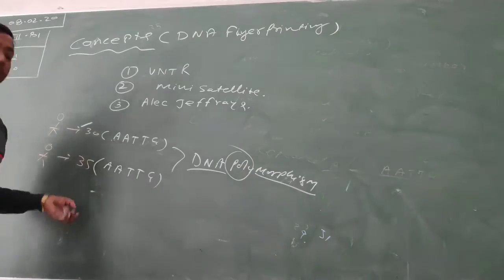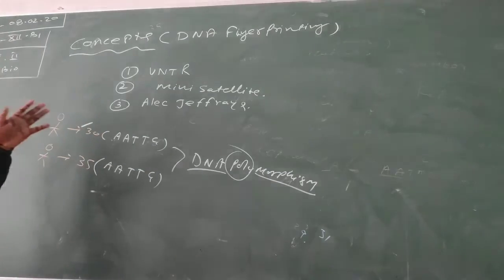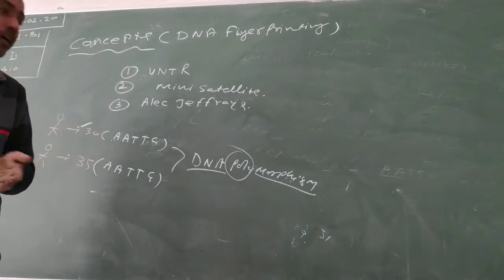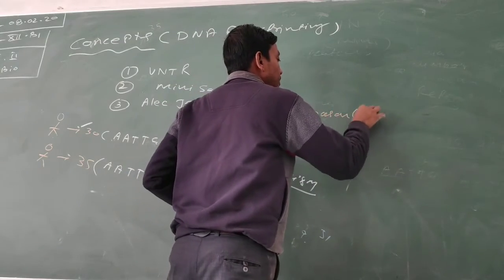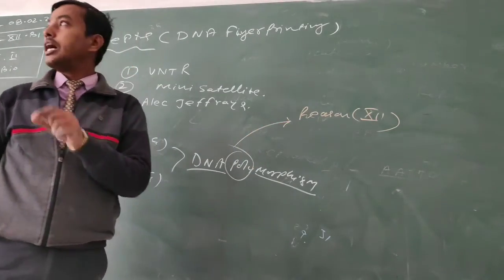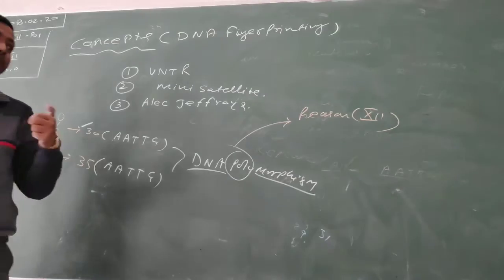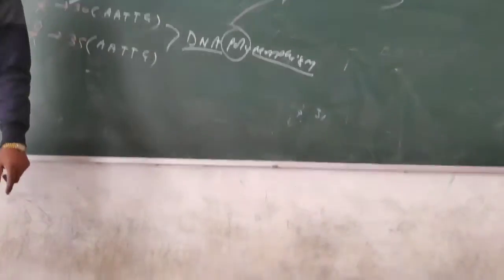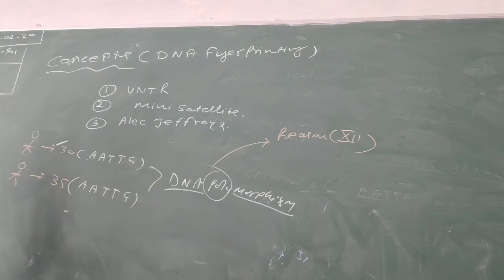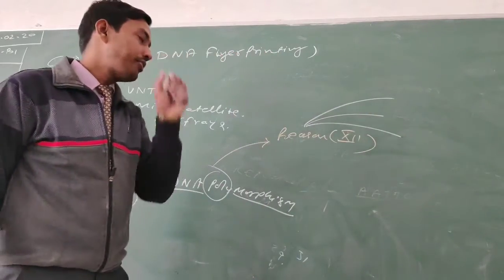Polymorphism means that person to person, the group of nitrogenous base sequences may be the same, but the number of repeats may not always be the same. A key question to consider is: what are the reasons behind DNA polymorphism? This is a very important concept. Person-to-person DNA polymorphism may appear among a population. The first reason — which may be asked by board examiners — is mutation.